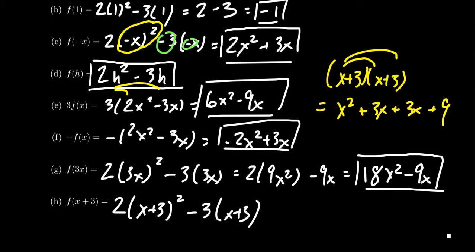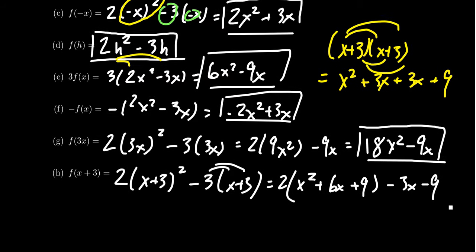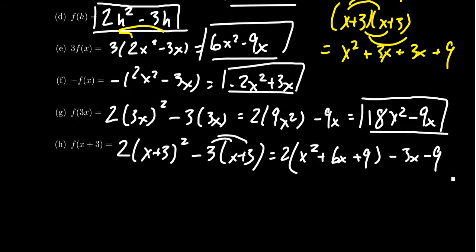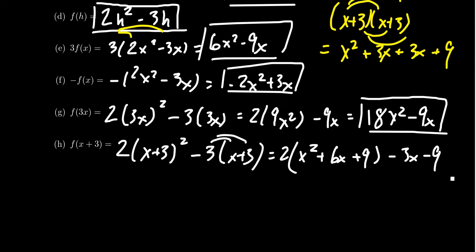Combining like terms, we would end up with, well, 2 times, we still have the two from before, 2 times (x² + 6x + 9). And then we're also going to distribute the 3 right here. So we end up with -3x - 9, make sure the negative sign comes with the negative three when you distribute it. So you get -3x and -9.